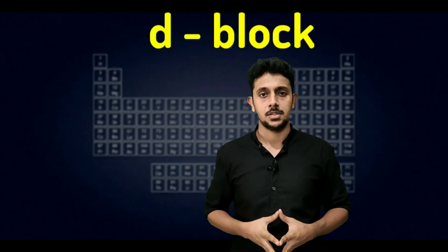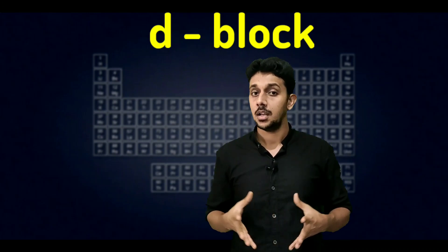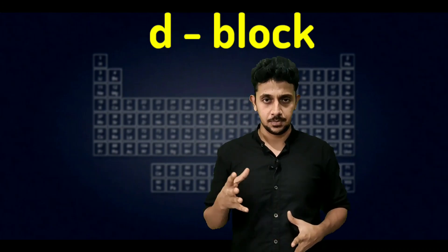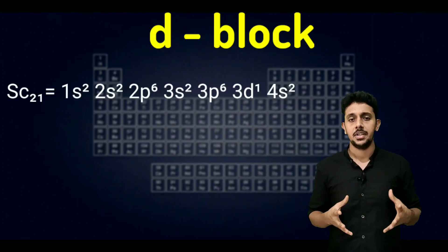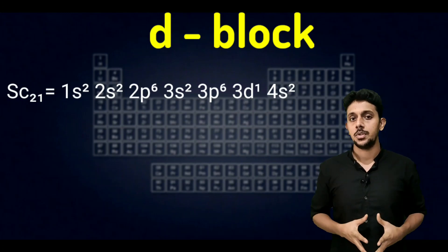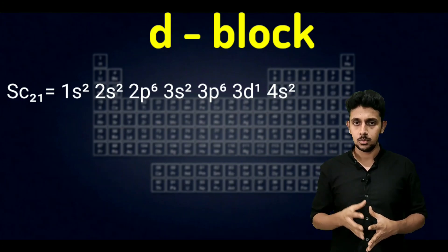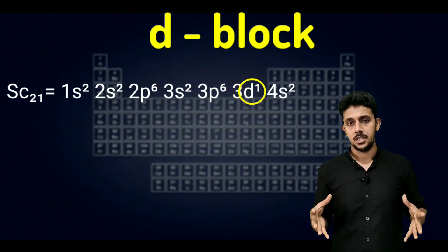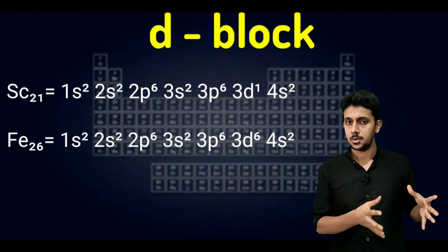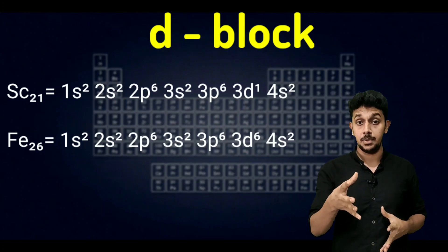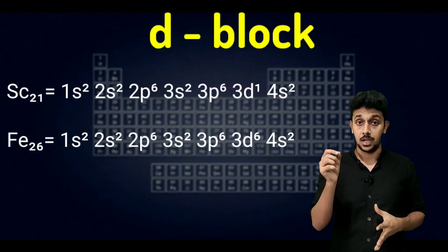D-block elements are those in which the last electron is added to the d sub-shell. For example, scandium with atomic number 21 has configuration 1s2 2s2 2p6 3s2 3p6 4s2 3d1 — the last electron is added to the d sub-shell. Iron with atomic number 26 has configuration 1s2 2s2 2p6 3s2 3p6 4s2 3d6 — the 26th electron is added to the d sub-shell.